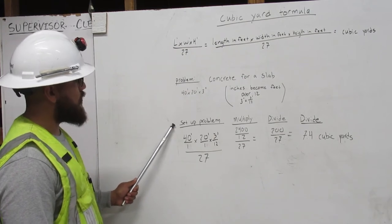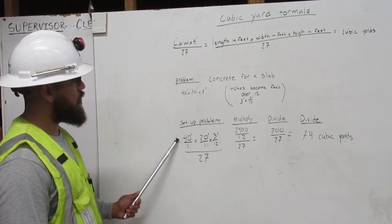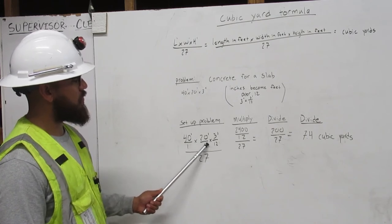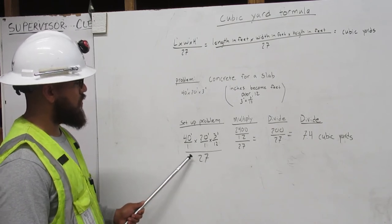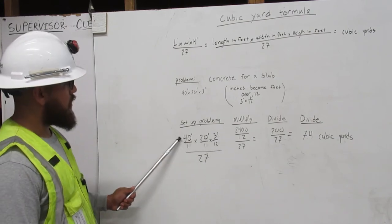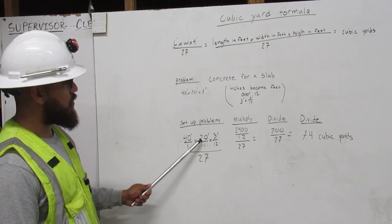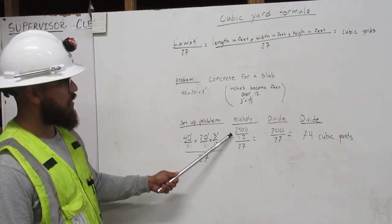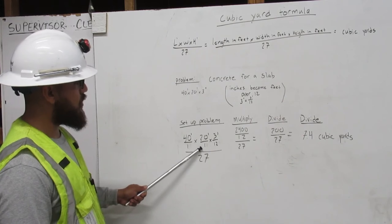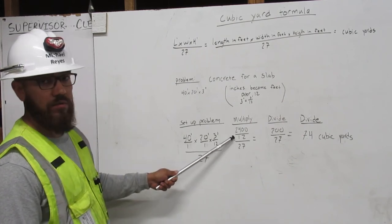Set up problem. 40 feet over 1 times 20 feet over 1 times 3 foot over 12 over 27. Next, we're going to multiply. 40 times 20 times 3 gives us 2,400. 1 times 1 times 12 gives us 12.